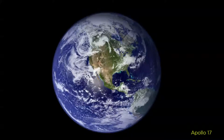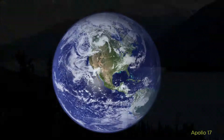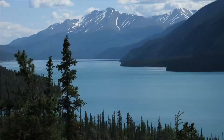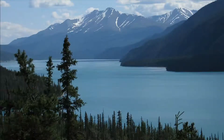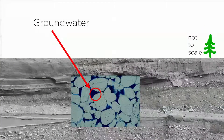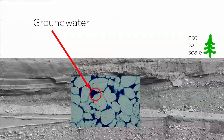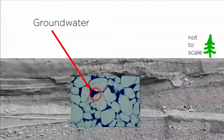We can see fresh water stored as surface water in our lakes, our reservoirs, and our rivers. What we can't see is the water that's stored underground as groundwater in the openings in the rocks and the sediments, in large regions referred to as groundwater aquifers.